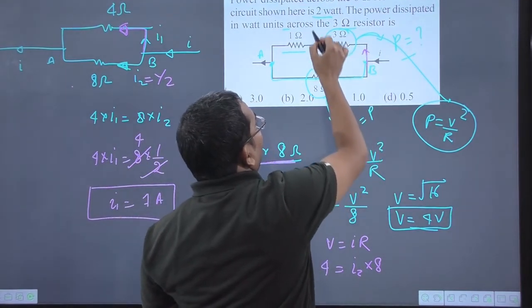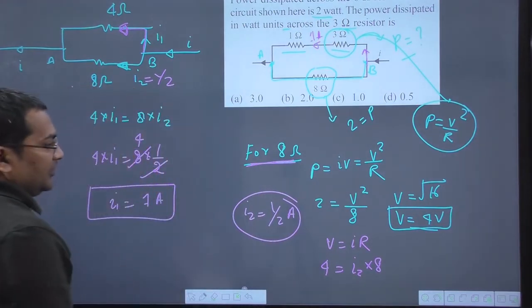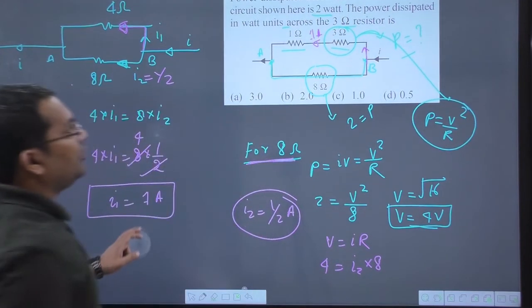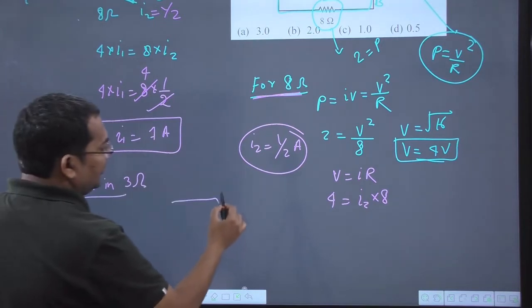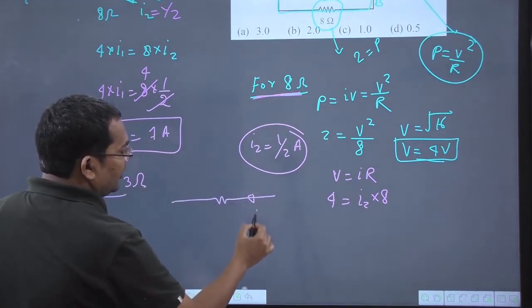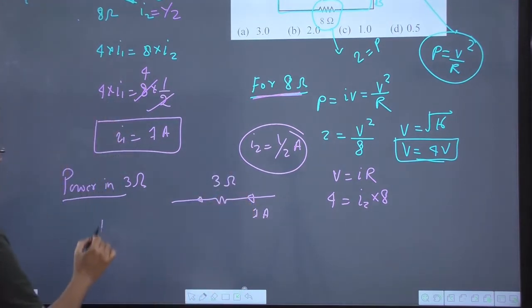So the power in the 3 ohm resistance - this is the 3 ohm resistor consuming 1 ampere current with value 3 ohms. Now its power equals V squared over resistance.